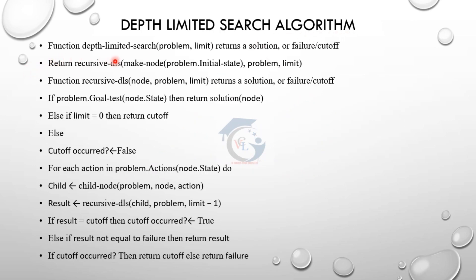Depth limited search algorithm: if we call a depth limited search problem, we have a limit. If we find a solution or failure, we will cut off. The function recursive DLS returns a solution or failure - the recursive function will be repeated. If problem goal test finds a solution in the initial state, we will return it. If we have a limit of zero, we go to the initial state and cut off. Otherwise, cut off occurred is set to false.